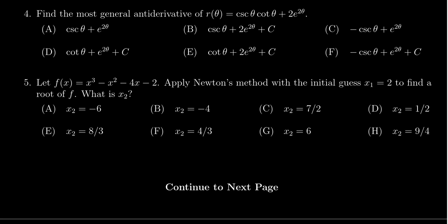We're given the function f(x) = x³ - x² - 4x - 2, and we're asked to apply Newton's method given the initial value x₁ = 2, and we're supposed to find x₂ in that sequence.